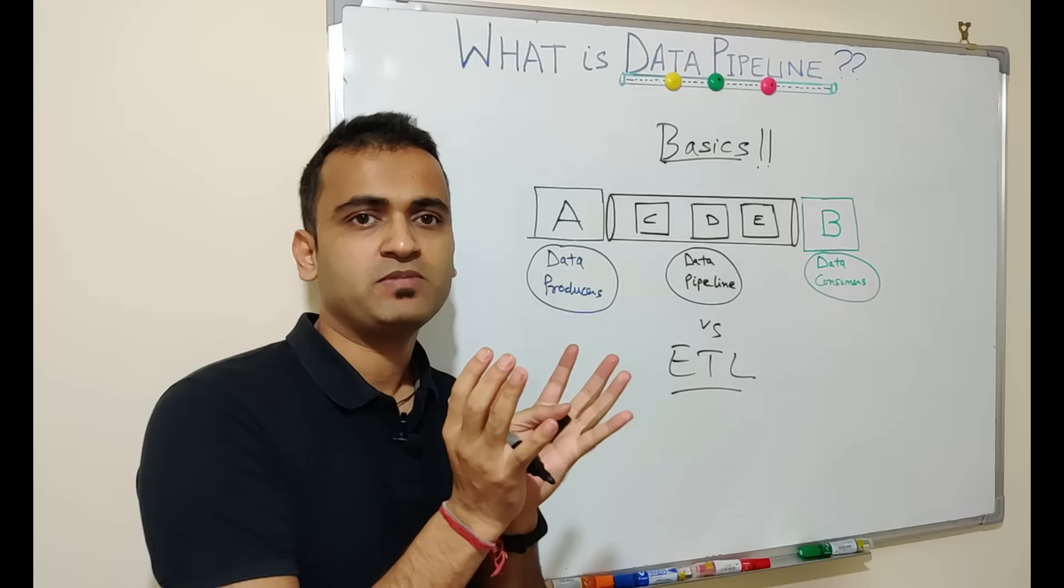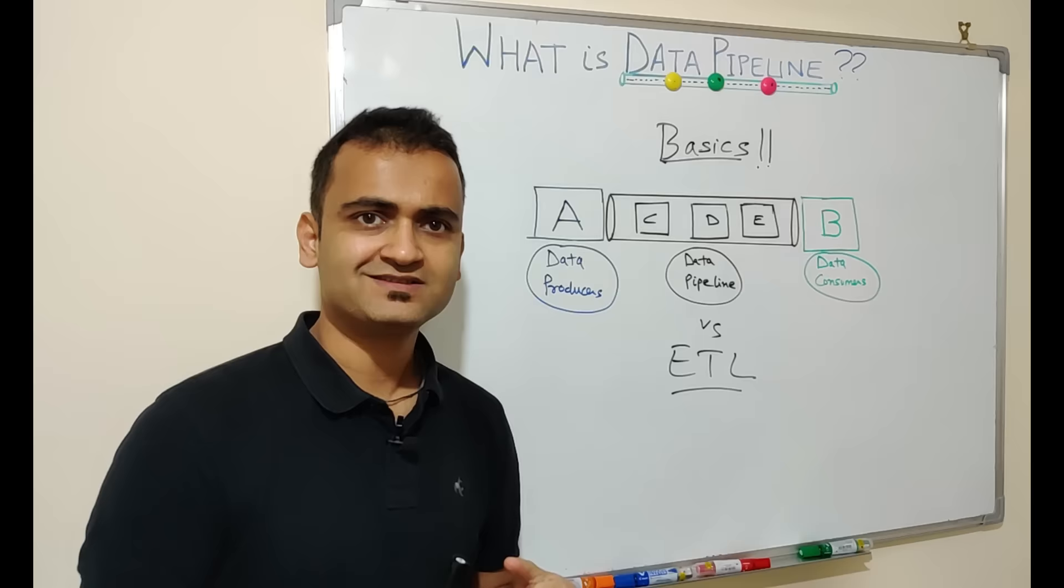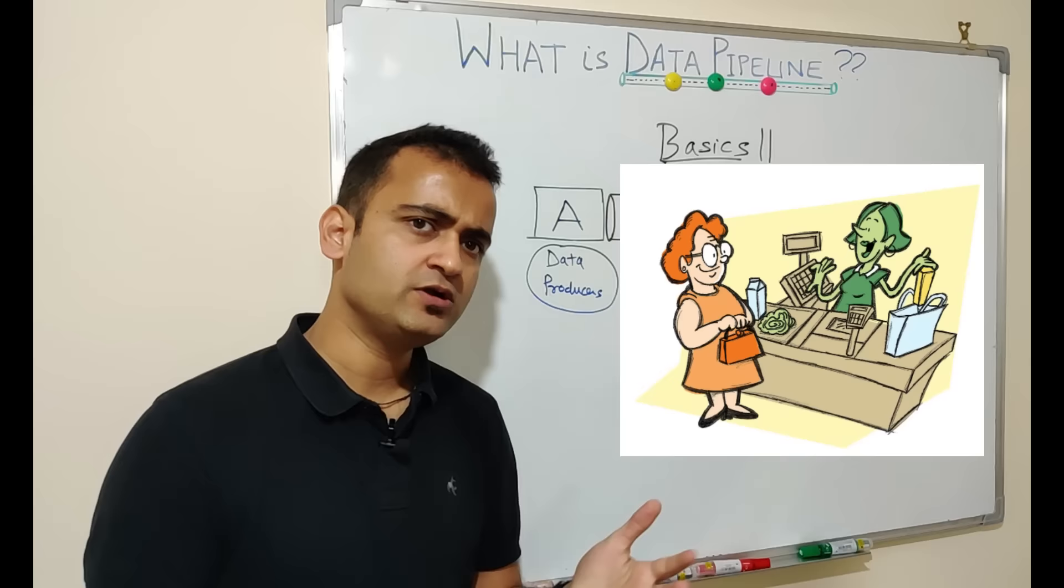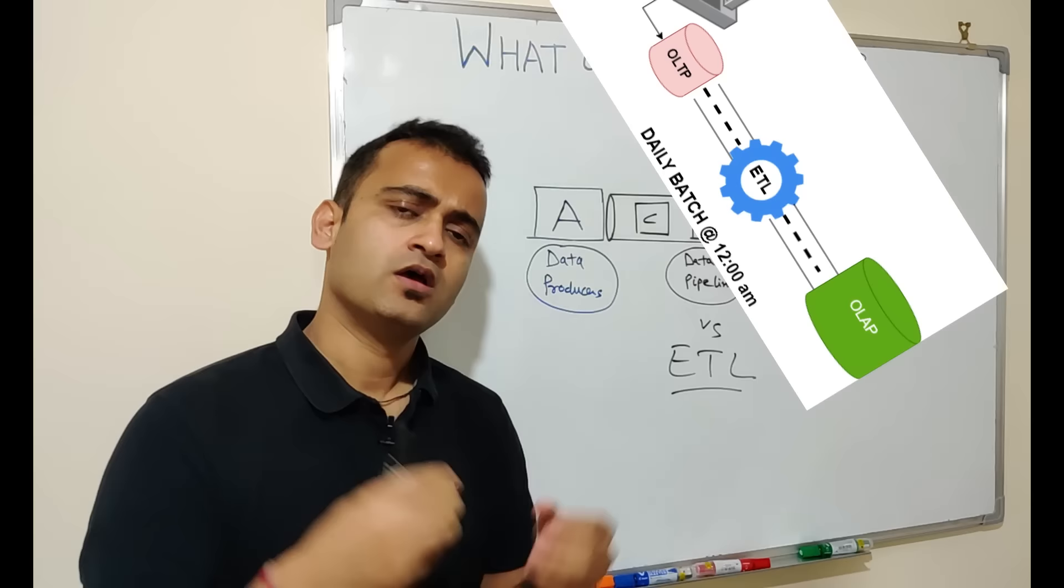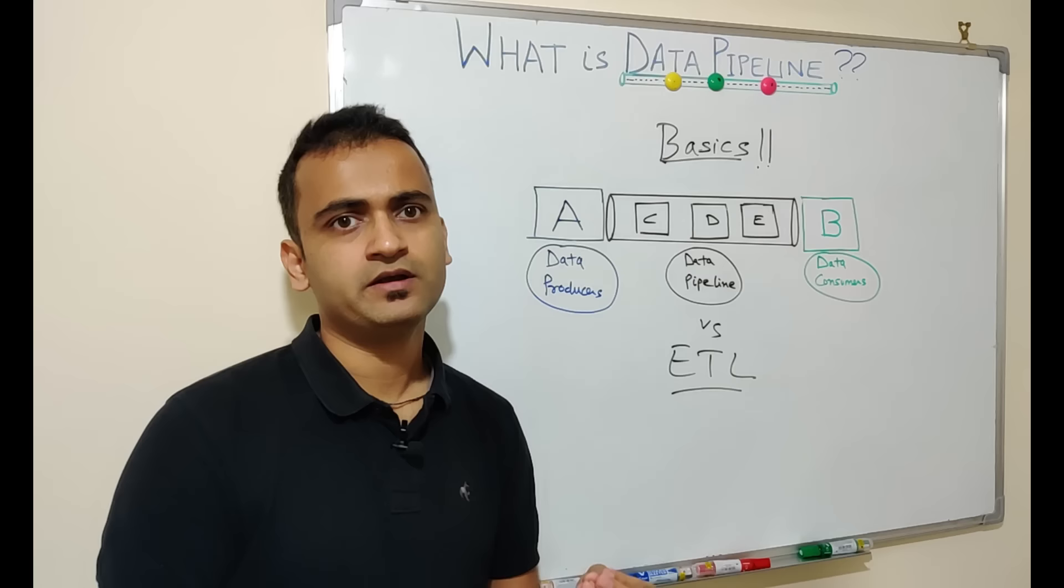Suppose you want to process daily sales data from a point-of-sale system from a retail outlet and you want to only do it on a daily basis. You will set up a batch process which will take the data at 12 midnight from the retail stores, fetch that data, store it into a database, and then maybe run some reports on top of it. You're running batch loads daily and you only need the data to be processed once in a day. This is a perfect case for an ETL design.